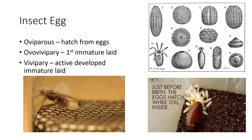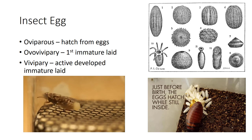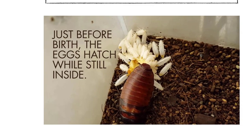Some eggs hatch within the female with the first-stage immature being laid, like in flesh flies, thrips, and some cockroaches as seen in this photo. This is called ovoviviparity.